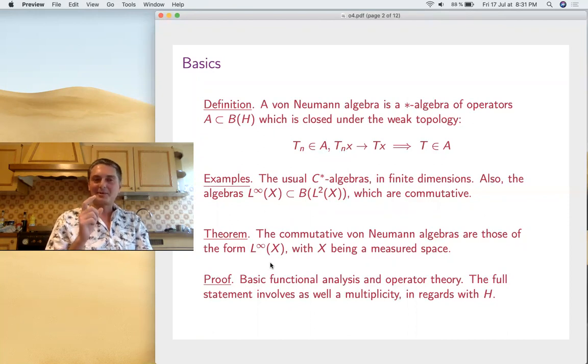So we can see now the difference between *-algebras and Von Neumann. C* are C(X) and in the commutative case Von Neumann are L^∞(X). It's two different things.